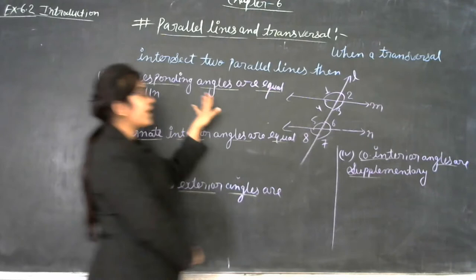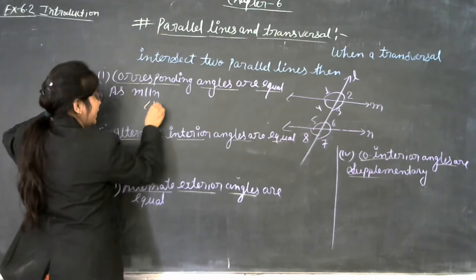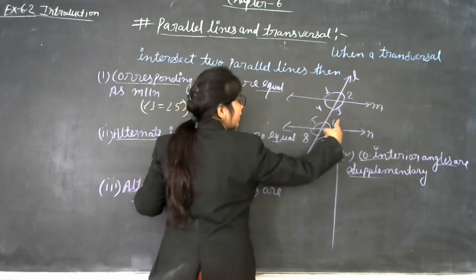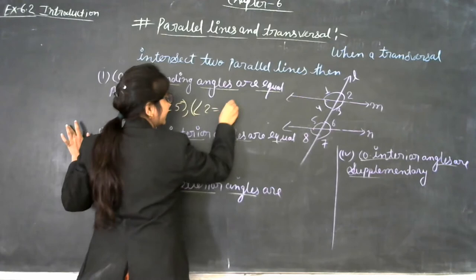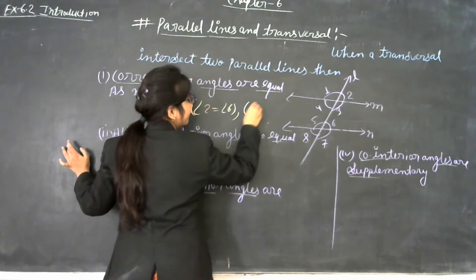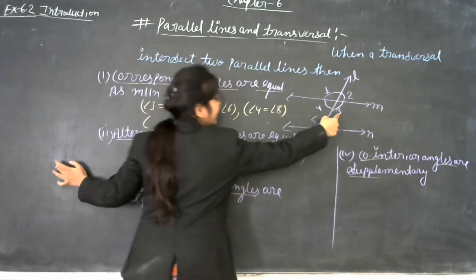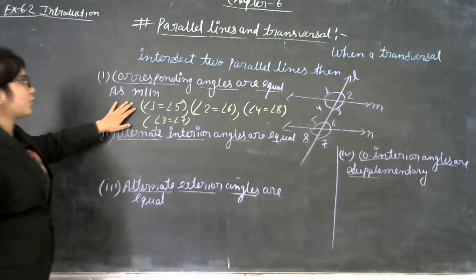When a transversal intersects two parallel lines, the corresponding angles are equal. So angle 1 equals angle 5 (first pair), angle 2 equals angle 6 (second pair), angle 4 equals angle 8 (third pair), and angle 3 equals angle 7 (fourth pair). These are the corresponding angle equalities.